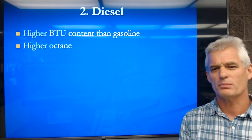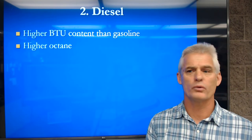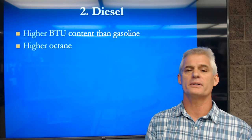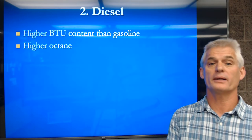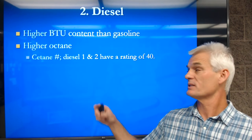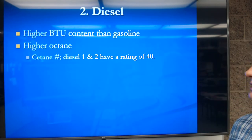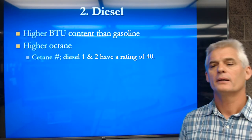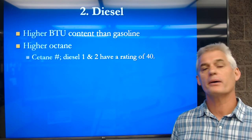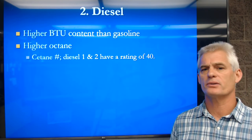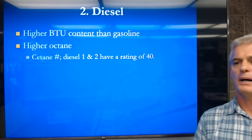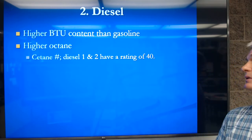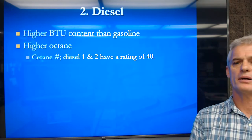Diesel has a much higher octane — we use a rating called a cetane number. The cetane number for diesel 1 and 2 is about 40. You can't really compare it directly to gasoline because they are different types of fuels. Diesel is a much more oily fuel but does have a very high resistance to burning.